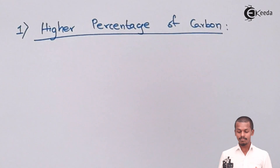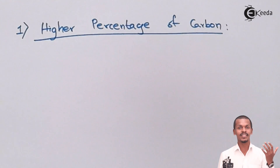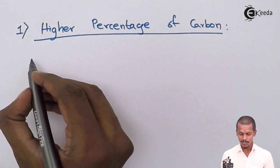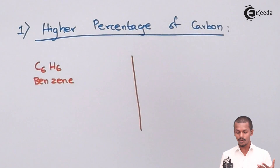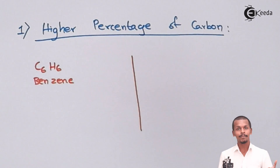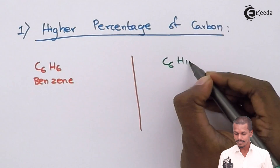Talking about higher percentage of carbon: suppose I compare this with an aliphatic hydrocarbon. An aromatic compound must consist of a benzene ring, and benzene is a cyclic hydrocarbon which consists of alternating double and single bonds. Benzene has a molecular formula of C6H6. Comparing C6H6 with a saturated alkane that also has 6 carbon atoms — a saturated alkane follows the molecular formula CnH2n+2, so with 6 carbons it would be C6H14.